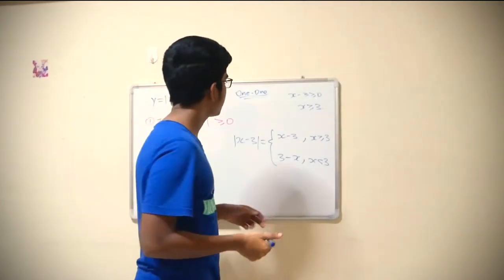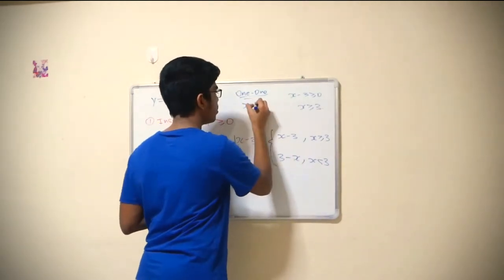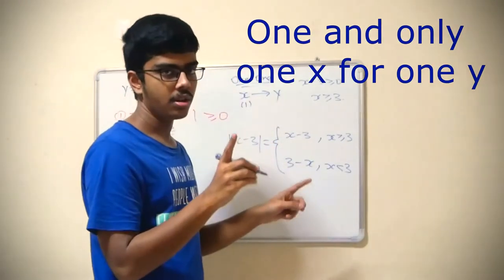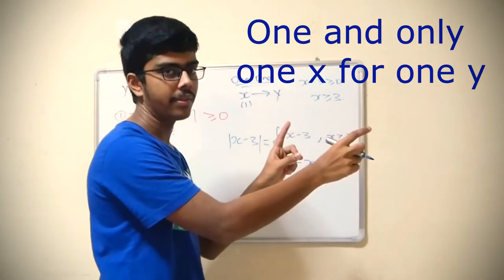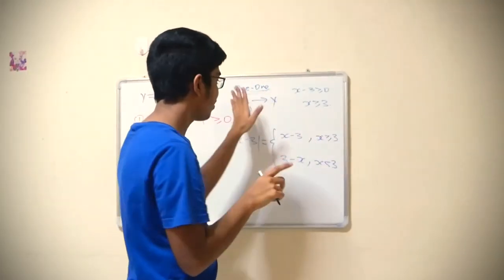What is a one-to-one function? Just a very short recap: one x value must give you one y value. The focus is only one x value maps to one y value, not two x values map to one y value. That is not allowed in a one-to-one function.